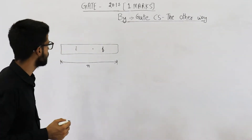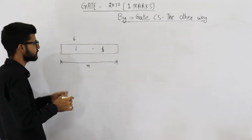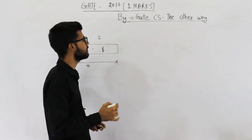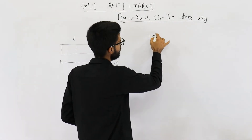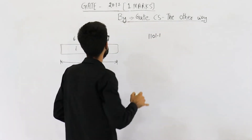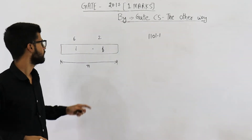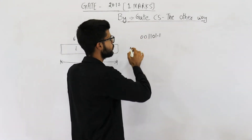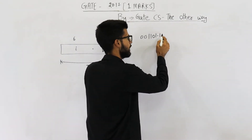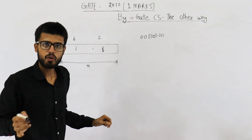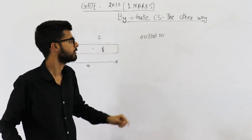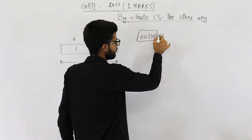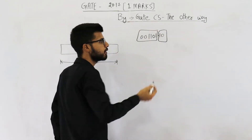Suppose you want to save 13.5. Say the value of i is 6. We are using 6 bits for the integer part and 2 bits for the fractional part. 13.5 in binary is 1101.1. We save 6 bits — add two zeros on the left — and 2 bits for the fractional part — add one zero on the right. We don't need to save the radix point; just save this bit pattern and it will automatically be interpreted as 13.5.